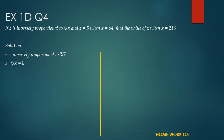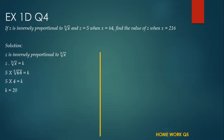Replace the value of x with 64 and z with 5. The cube root of 64 is 4, because 4 times 4 times 4 is 64. So k will be 20.